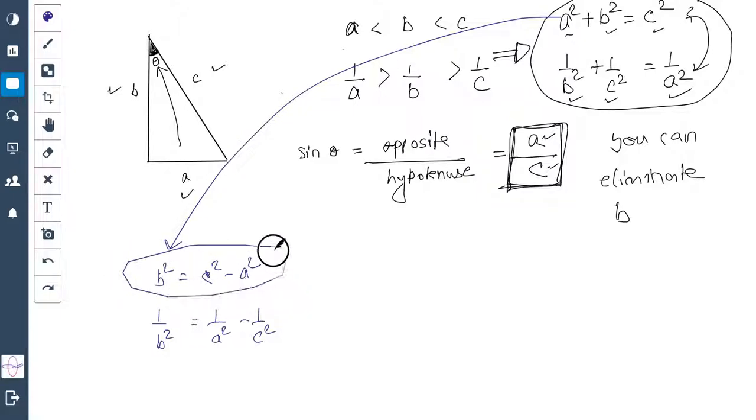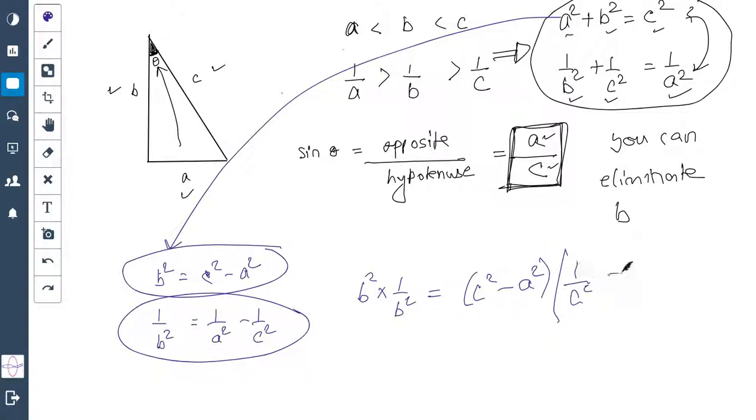If we multiply these two equations, we get B² times 1/B² equals C² - A² times 1/A² - 1/C².